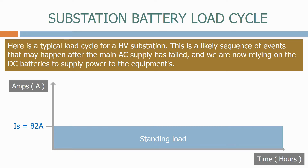Next we have the dynamic loads. In the first case we have calculated the load for all the circuit breakers tripping on the system and assumed a load current of 142 amps for 1 second.